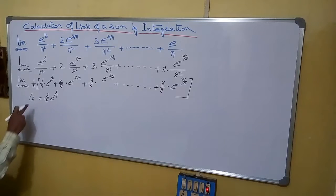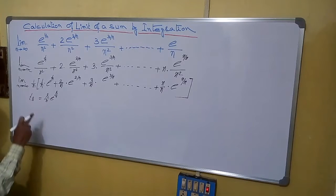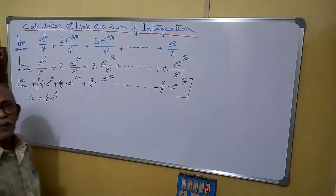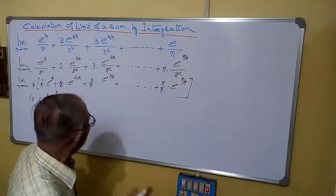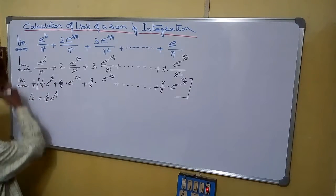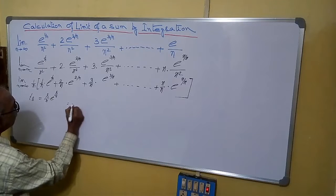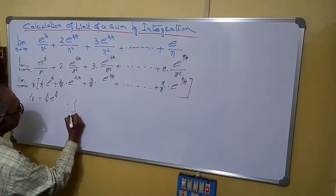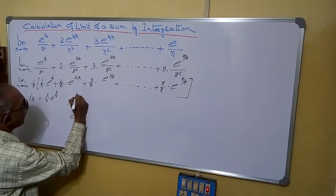So here TR is coming this one. Now R/n, instead of R/n, put it as x. I have to write this limit: required limit equals to integration of 0 to 1.